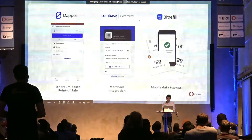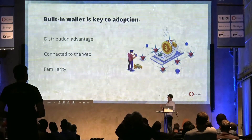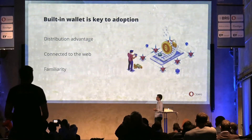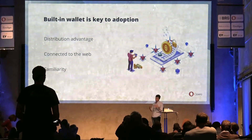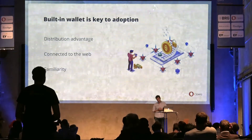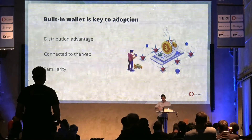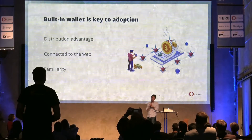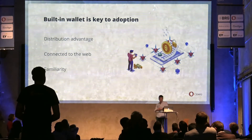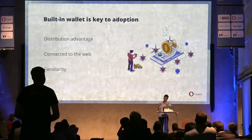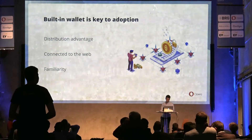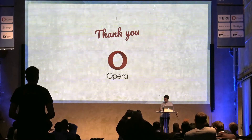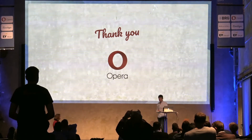We really believe that by removing this friction we enable a whole new kind of applications and business models to emerge on the web. I believe other browsers will follow, and in the long term, operating systems will follow, so that this kind of key management capability will be embedded at the system level and applications like browsers will integrate with that. Thanks for listening and thanks for the extra time.